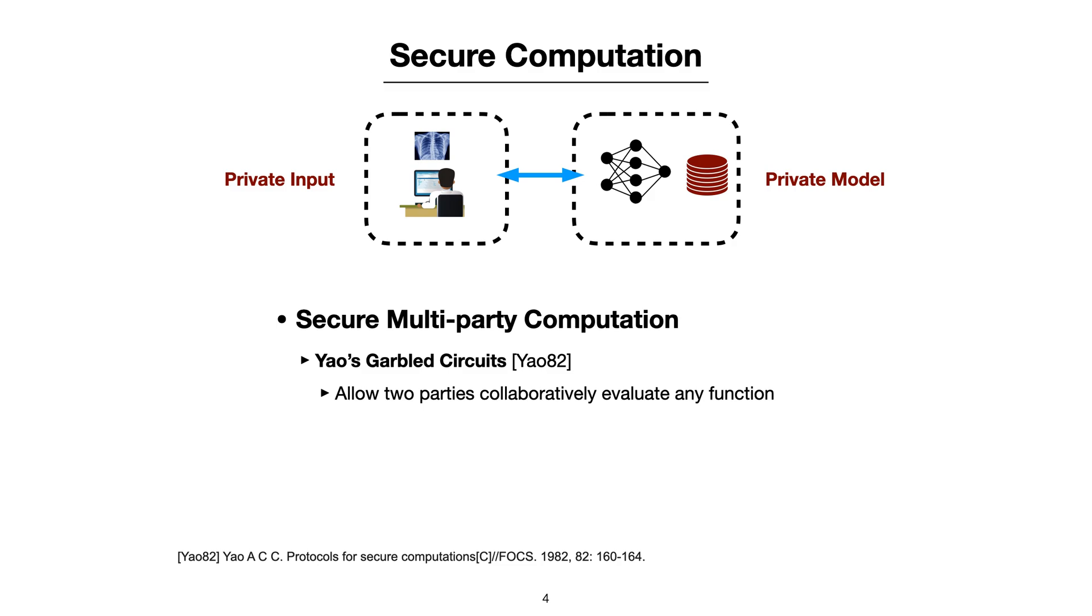The second one is Secure Multi-Party Computation. It allows two parties to collaboratively evaluate any function. Compared with fully homomorphic encryption, it has low computation cost, however, high communication cost. Our paper utilizes these two techniques together.